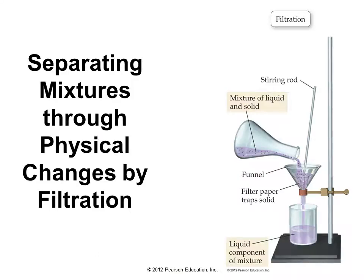We can separate mixtures by filtration. If we have a solid and a liquid, all we need to do is pour through a funnel — the filter paper will collect the solid, and the liquid will appear in the bottom, separating the two components of the mixture.